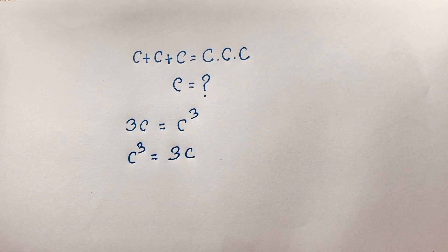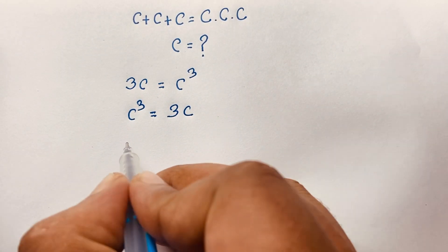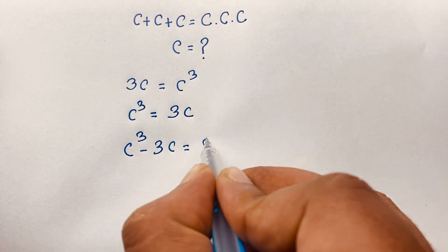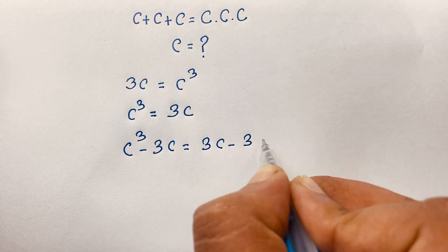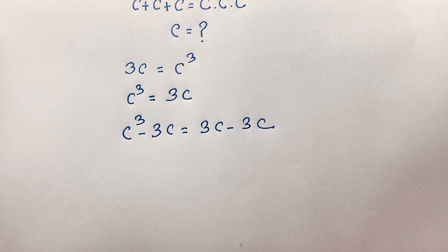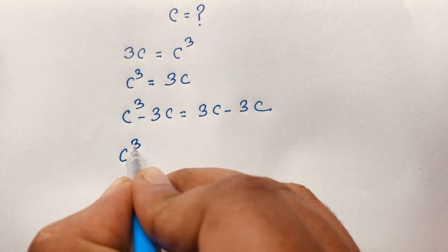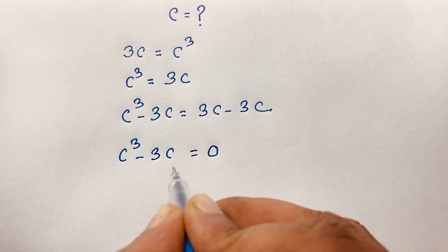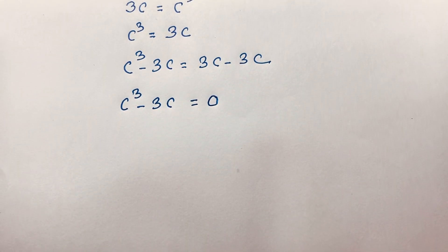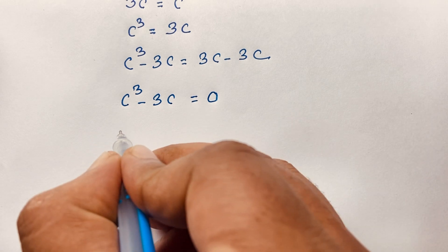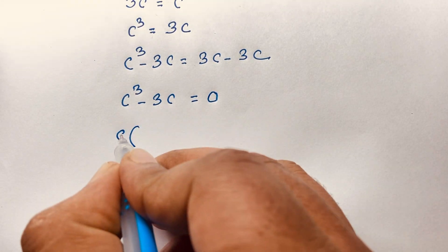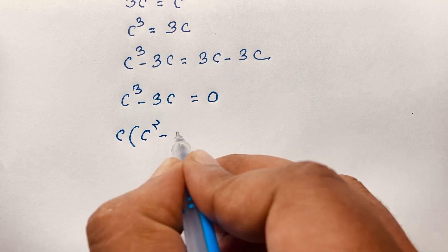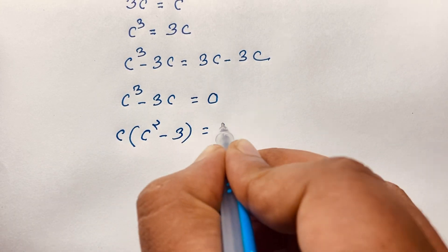I just move on. Now, if I subtract both sides minus 3C — here is 3C minus 3C — I subtract both sides 3C, then you can see this expression: C to the power 3 minus 3C is equal to 0. Now, C is common, so this C cubed divided by C gives C squared, minus 3C divided by C gives 3, is equal to 0.